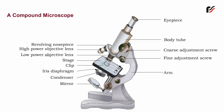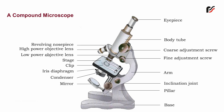Arm: It is curved, supports the body tube, and is used for handling the microscope. Pillar: It is a vertical projection fixed with a hinge to the foot, i.e., the base. Base: It is a horseshoe-shaped structure that provides stability and support to the microscope. Inclination Joint: It is the point where the arm is attached to the pillar, and this permits tilting of the microscope to adjust to the eye level.